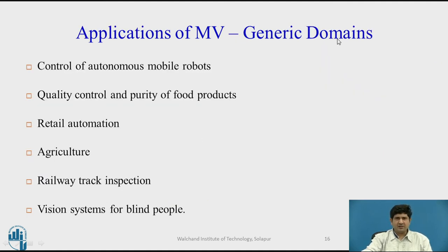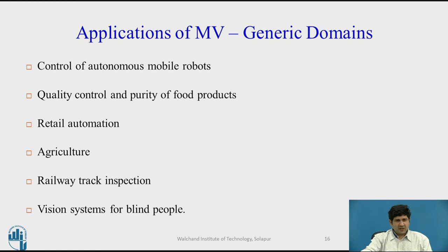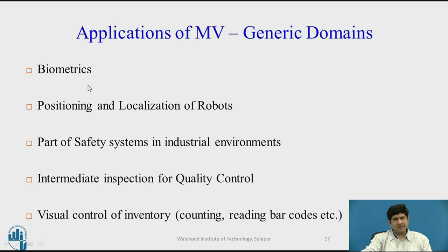What are the applications of machine vision? We have a dedicated video for this. Generic domains include control for autonomous mobile robots, quality control applications in industry, retail automation such as barcode readers, and agricultural automation — a very upcoming field for detecting plant diseases. Railway track inspection for cracks and flaws is a very specialised application. New developments involve vision systems for blind people. Other applications include biometrics like facial recognition, positioning systems, safety systems for industrial environments, extensive use in inspection and quality control, and inventory control including counting, barcode reading, and supply chain management.